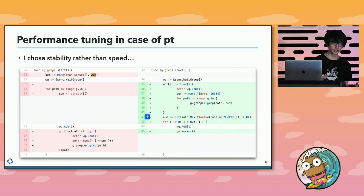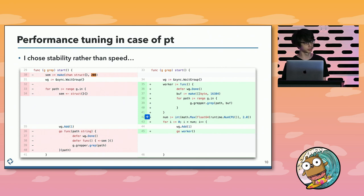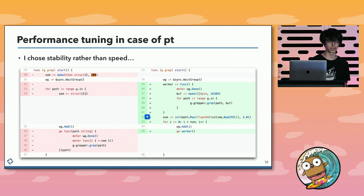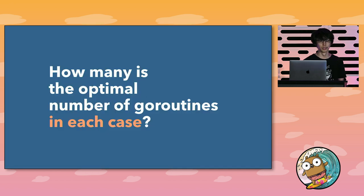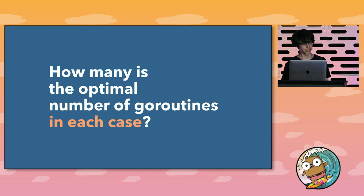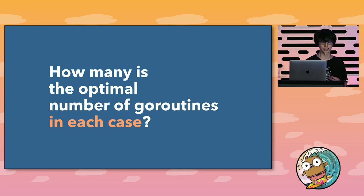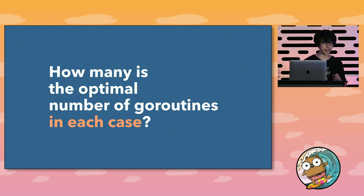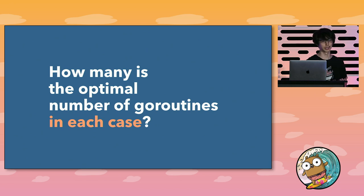Currently, the Platinum Searcher is bounding concurrency using the number of CPUs — namely, I am choosing a safer way, but it isn't the fastest. That concludes this part on my experience of performance tuning. Achieving both speed and stability, we have to decide the optimal number of goroutines through our experiences and continuous tuning. In most cases, the environment in which the program is tuned and the environment in which it will be executed is different. Thus, I'd like to consider optimization for the number of goroutines without depending on the environment.